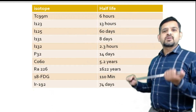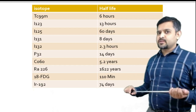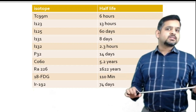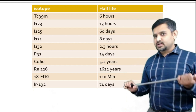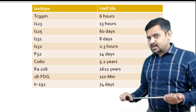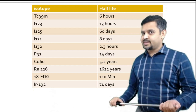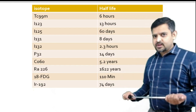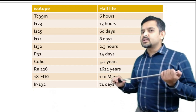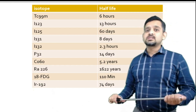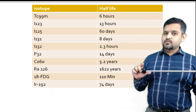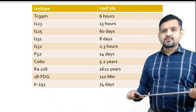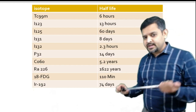Iodine-125 has a half-life of 60 days, whereas iodine-131 has a half-life of 8 days. Iodine-132 has a half-life of 2.3 hours, whereas phosphorus-32 has a half-life of 14 days.